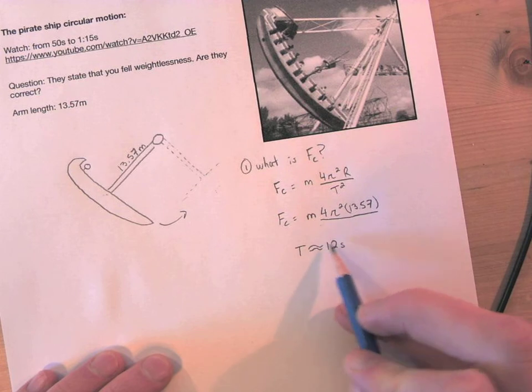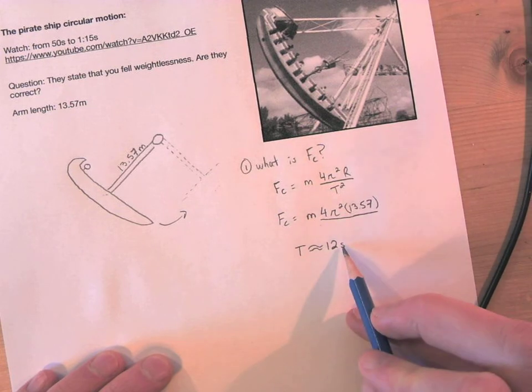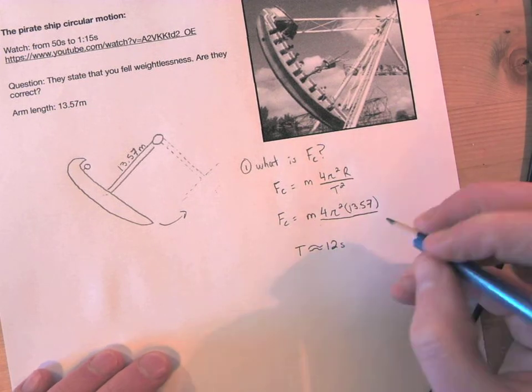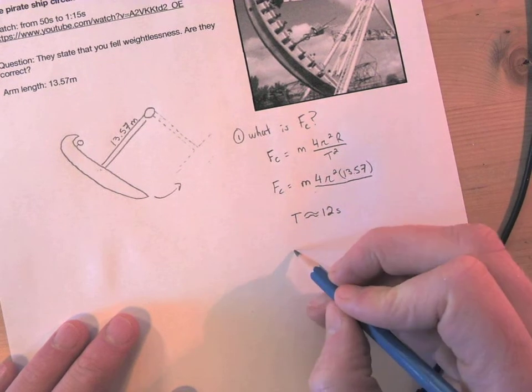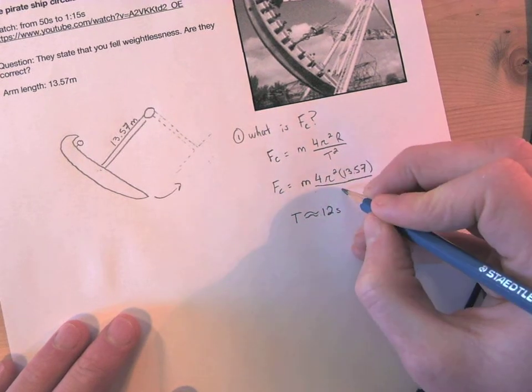So if it takes three seconds to do a quarter of a circle, it's going to be very roughly 12 seconds I would say, maybe sig fig wise that is correct, 12 seconds to go around the whole circle.